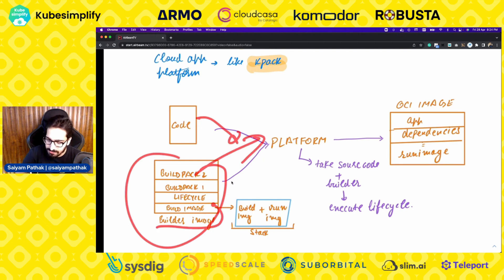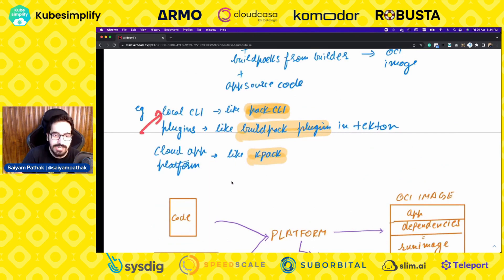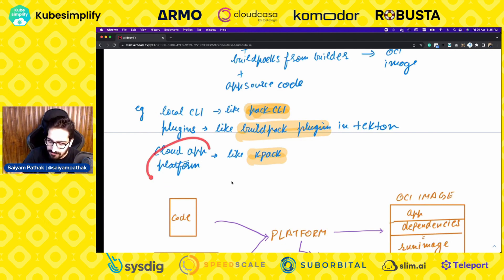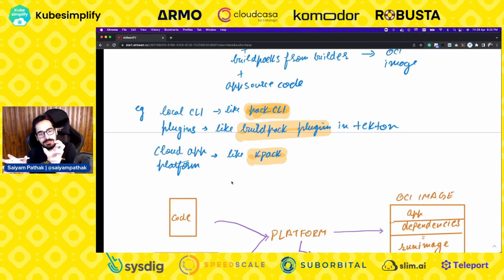Different platforms include a local CLI — you can install the pack CLI — then plugins in the CI/CD ecosystem like Tekton and GitHub Actions, and cloud application platforms like KPACK. You use those platforms to execute commands like pack build. That particular platform executes all the phases.